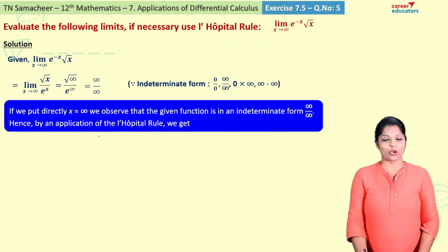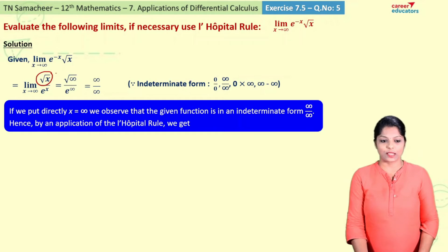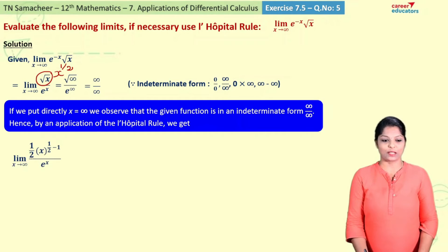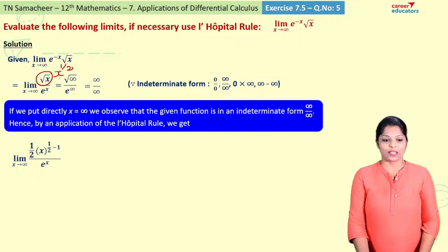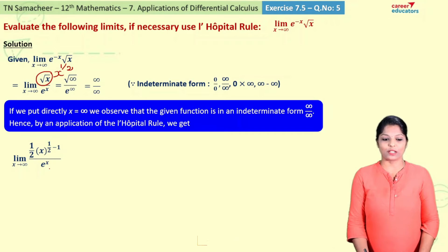According to L'Hôpital's rule, we have to differentiate the numerator and denominator separately. Differentiating the numerator: root x is x to the power 1 by 2. Differentiating x to the power 1 by 2, we get 1 by 2 into x to the power 1 by 2 minus 1, divided by e power x.